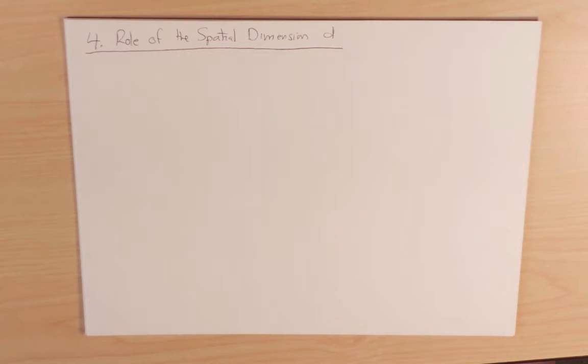We normally think of random walks as moving about in one dimension, two dimensions, or three dimensions.